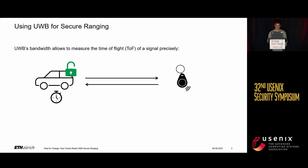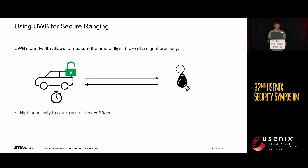This can be secured by cryptographic means, meaning by transmitting pseudorandom sequences. It can be made sure that an attacker in the middle doesn't know the sequence and cannot launch prior distance reduction attacks.